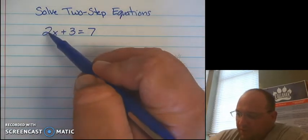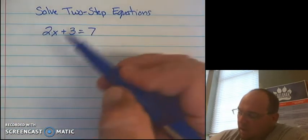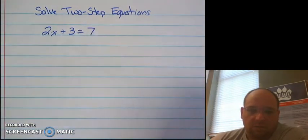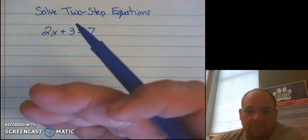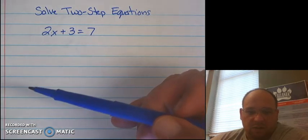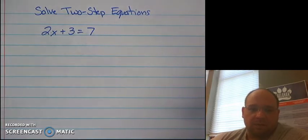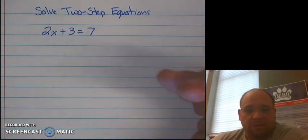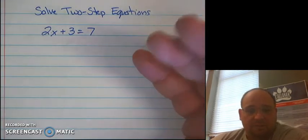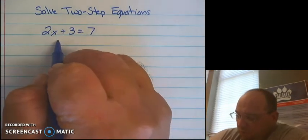In this case, we have multiplication going on between the 2 and the x, and we have addition going on here with the 3. So when I work backwards, I'm going to look at subtraction and addition first, and I want to eliminate that. So I want to eliminate this plus 3. I eliminate plus 3 by doing the inverse of adding 3, which is subtracting 3.